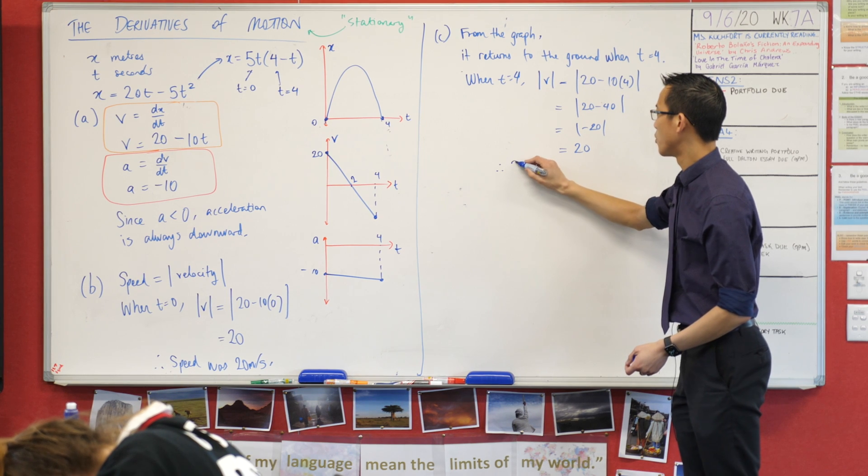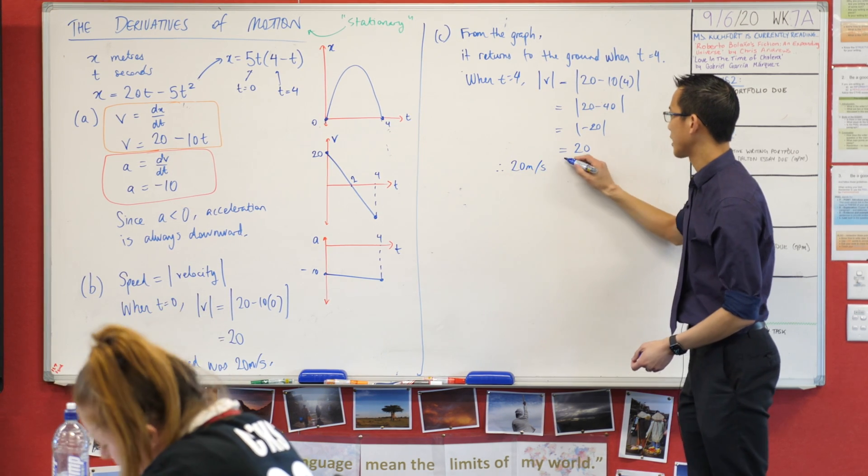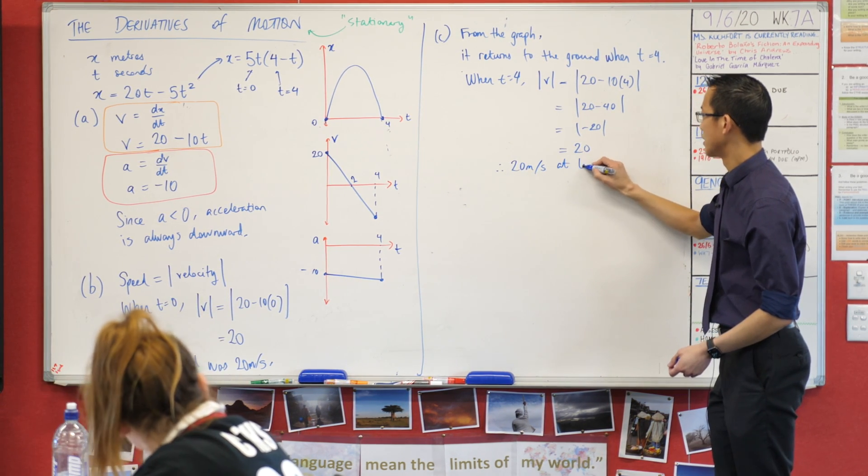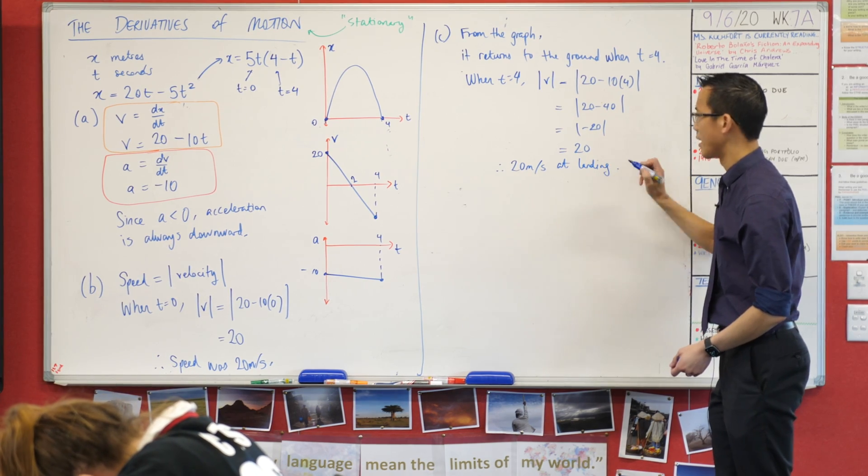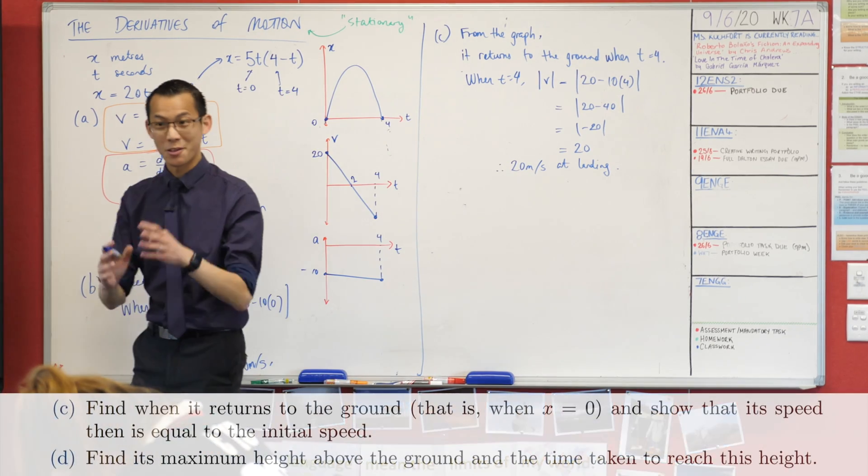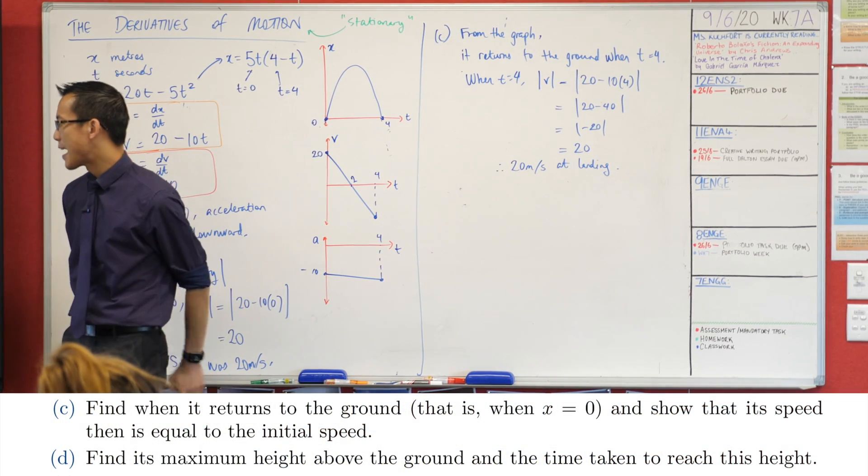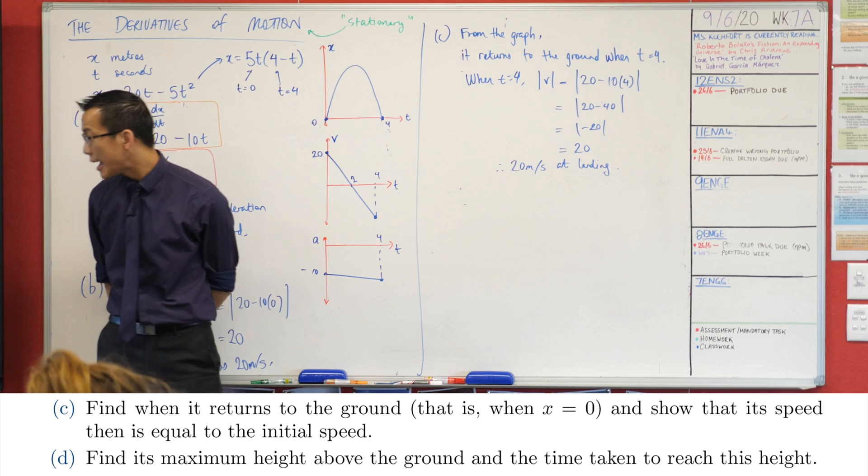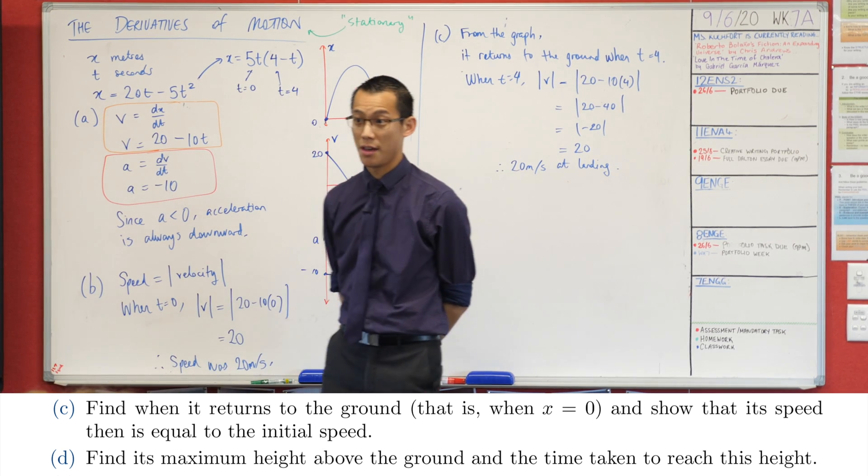So this is 20 meters per second at landing, I guess we could say, or at return to ground. So it's the same, great. Part D, we're on the home stretch. Find its maximum height above the ground and the time taken to reach this height. Now I'm actually going to suggest it's easier to answer that in reverse.